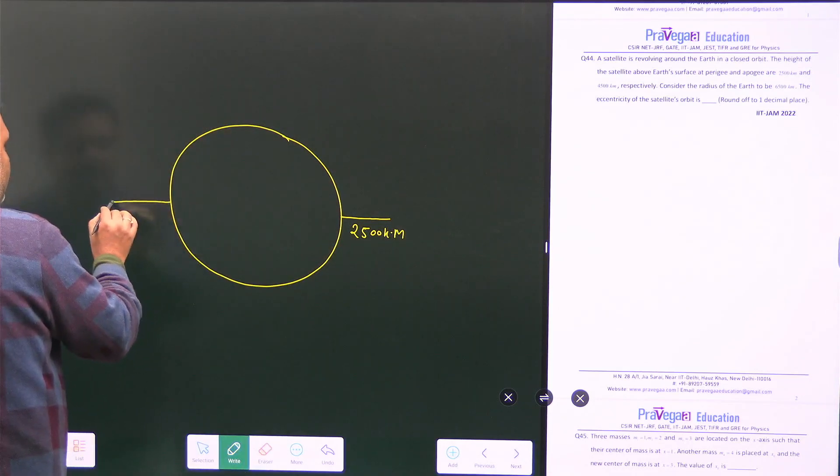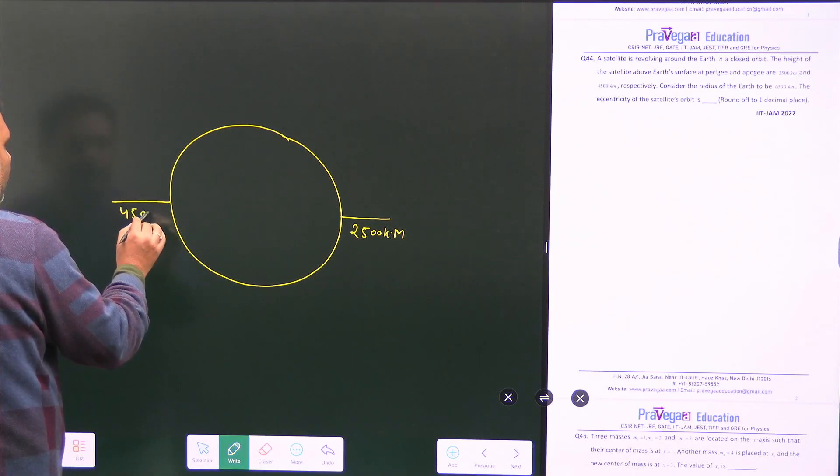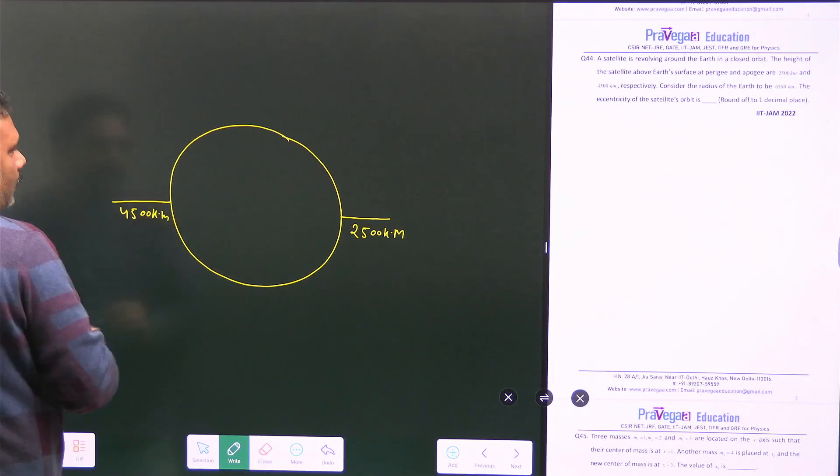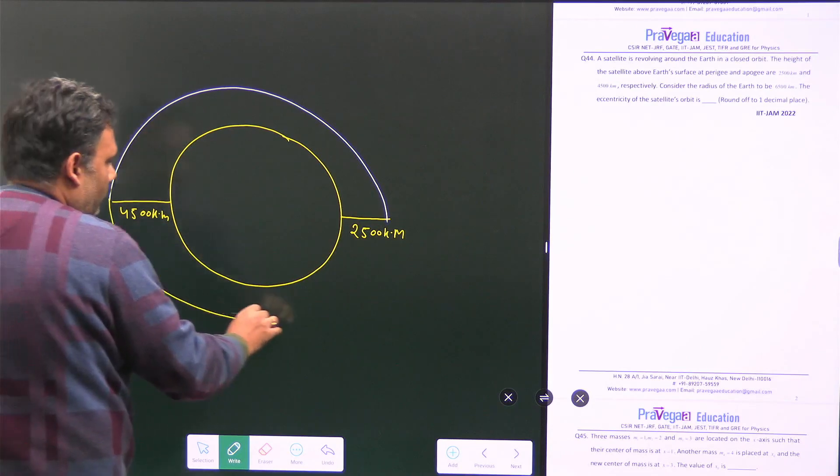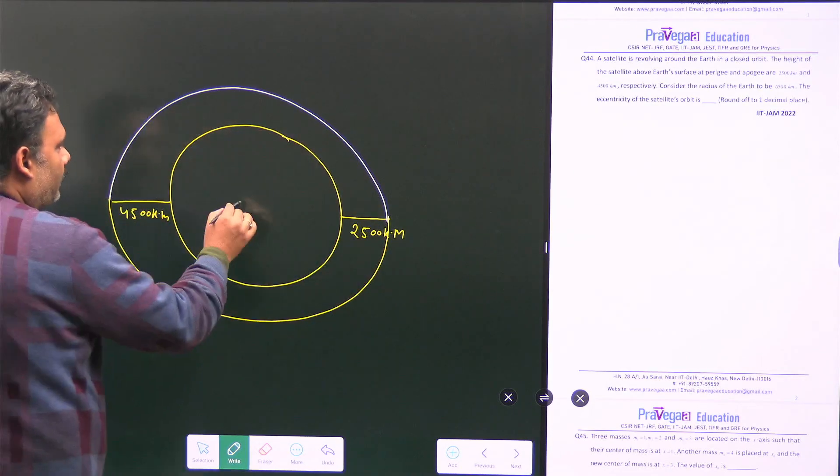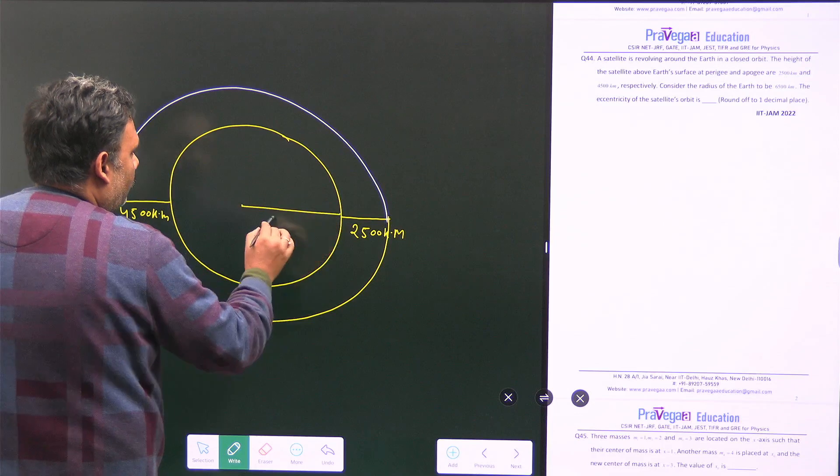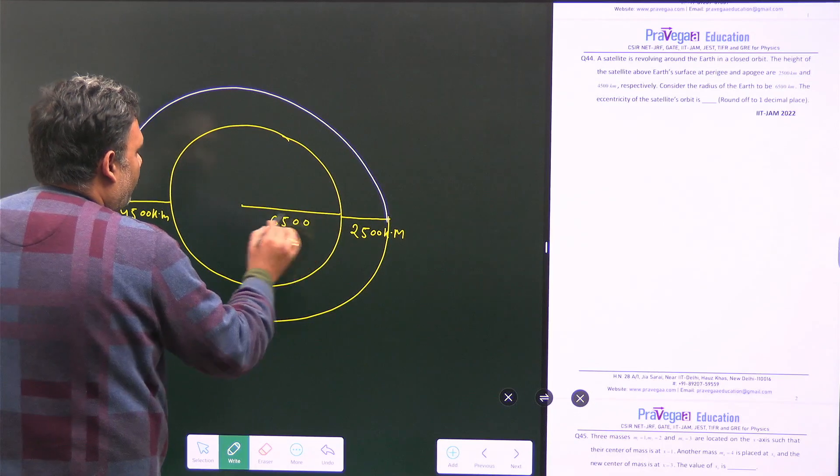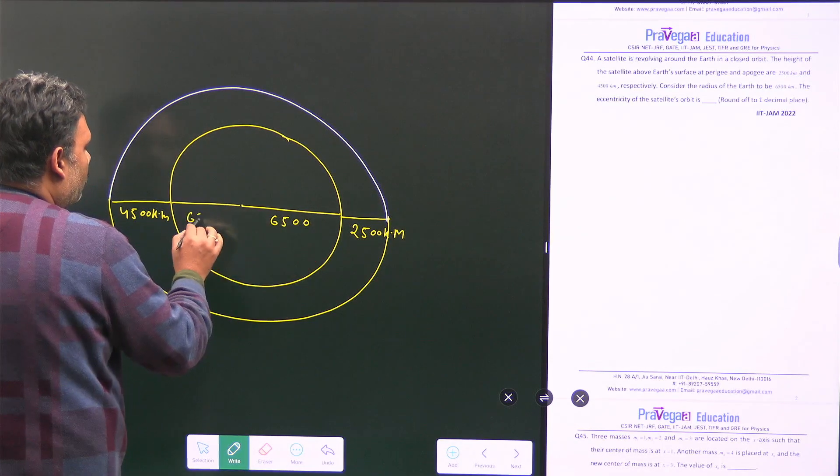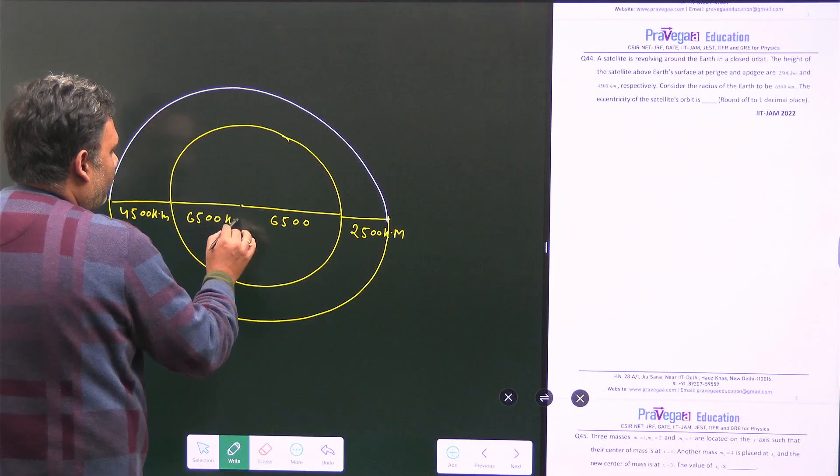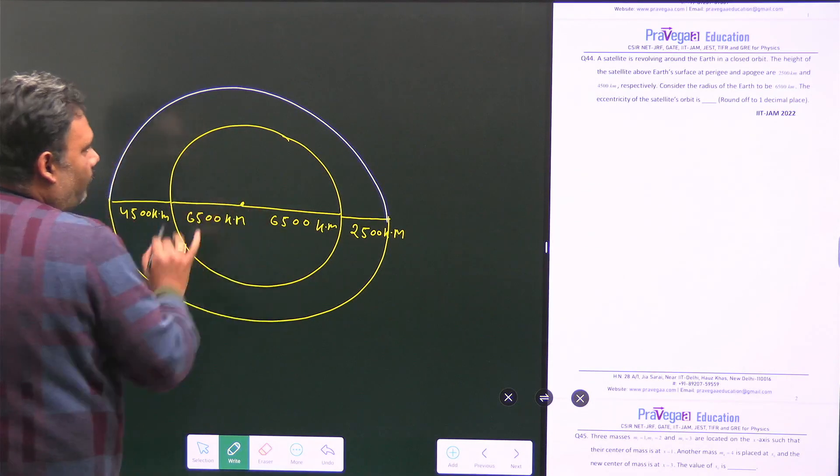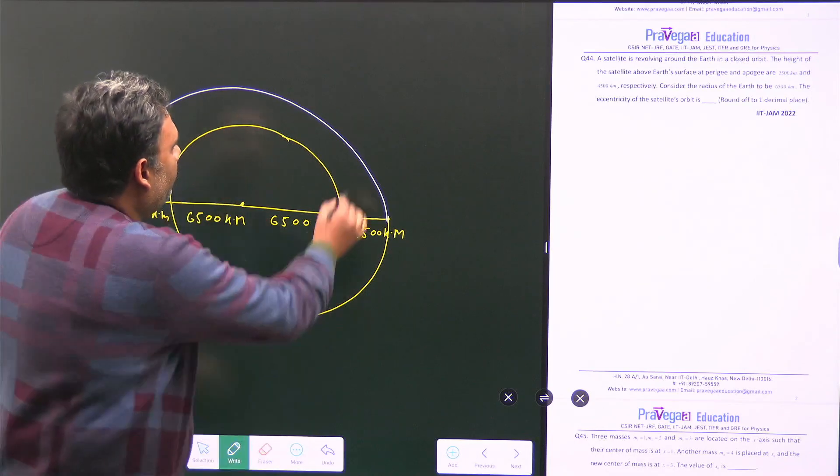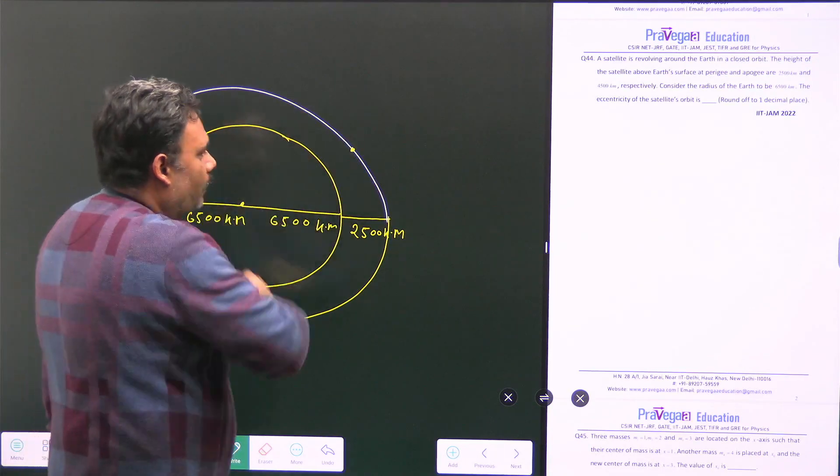it has distance that is nothing but 4500 km. And from there, we can have this orbit, so this is our orbit and this is my center. This value is 6500 km and this value is also 6500 km. So this is my center of this particular earth and here you can have in this orbit we have satellite.